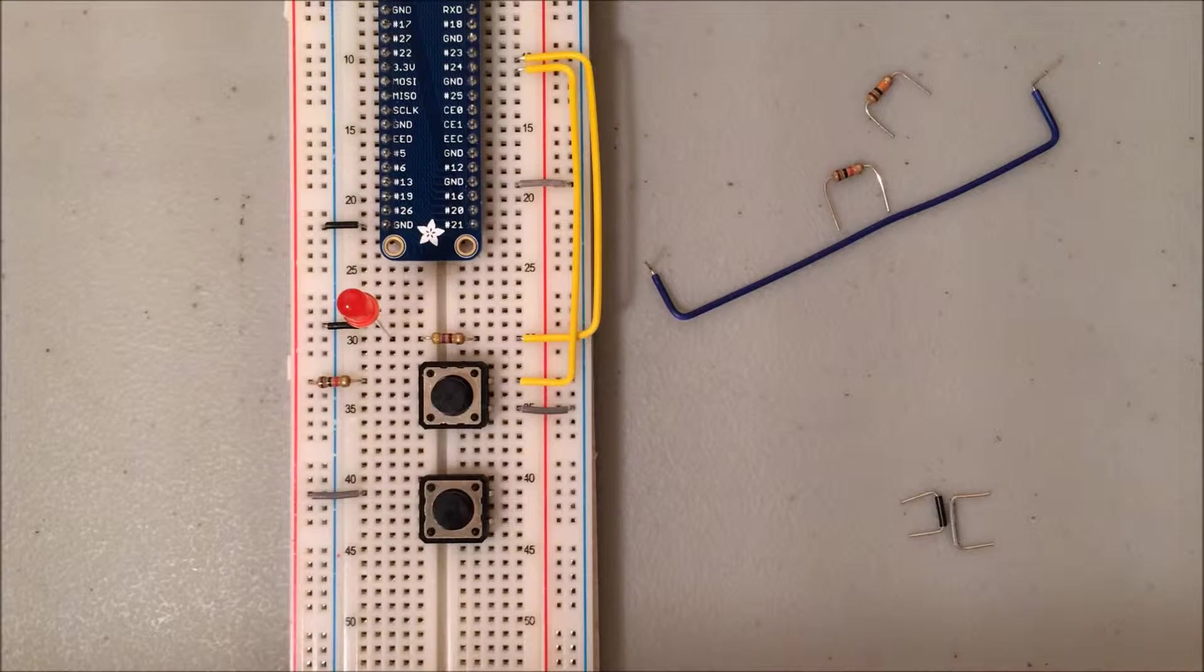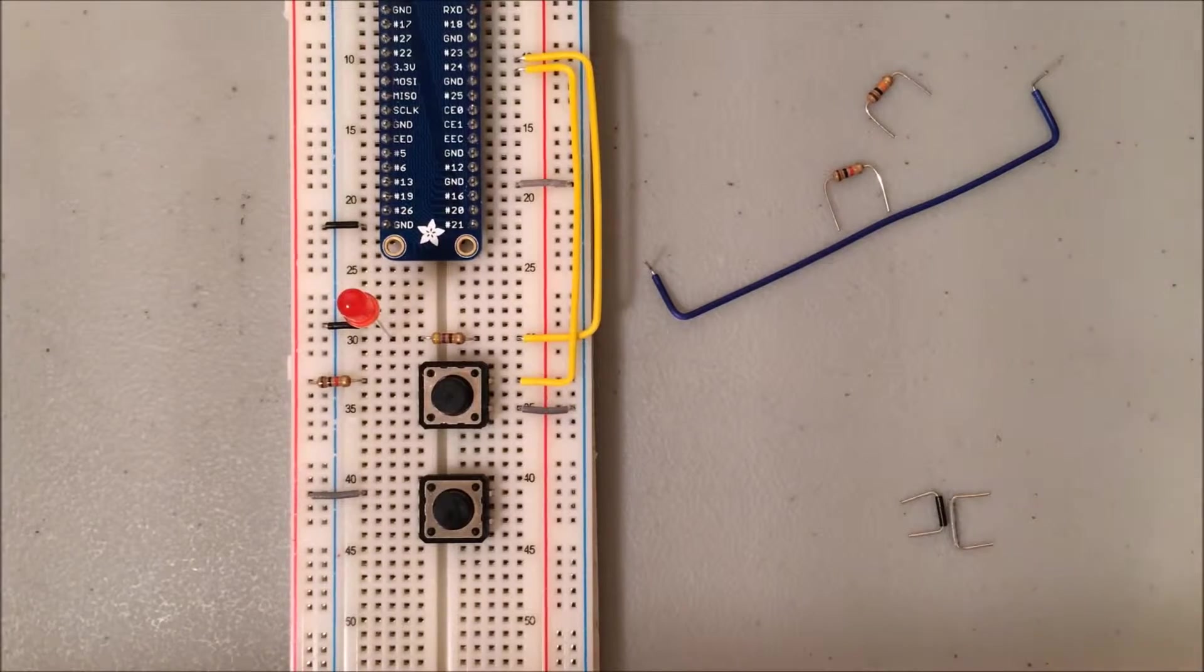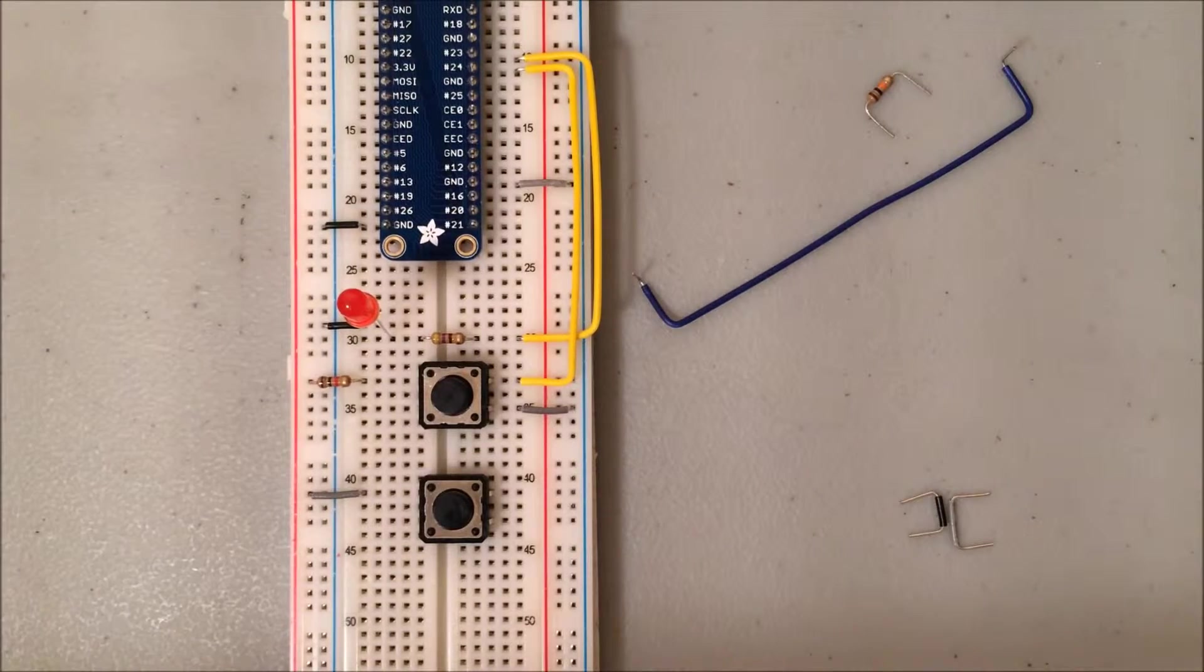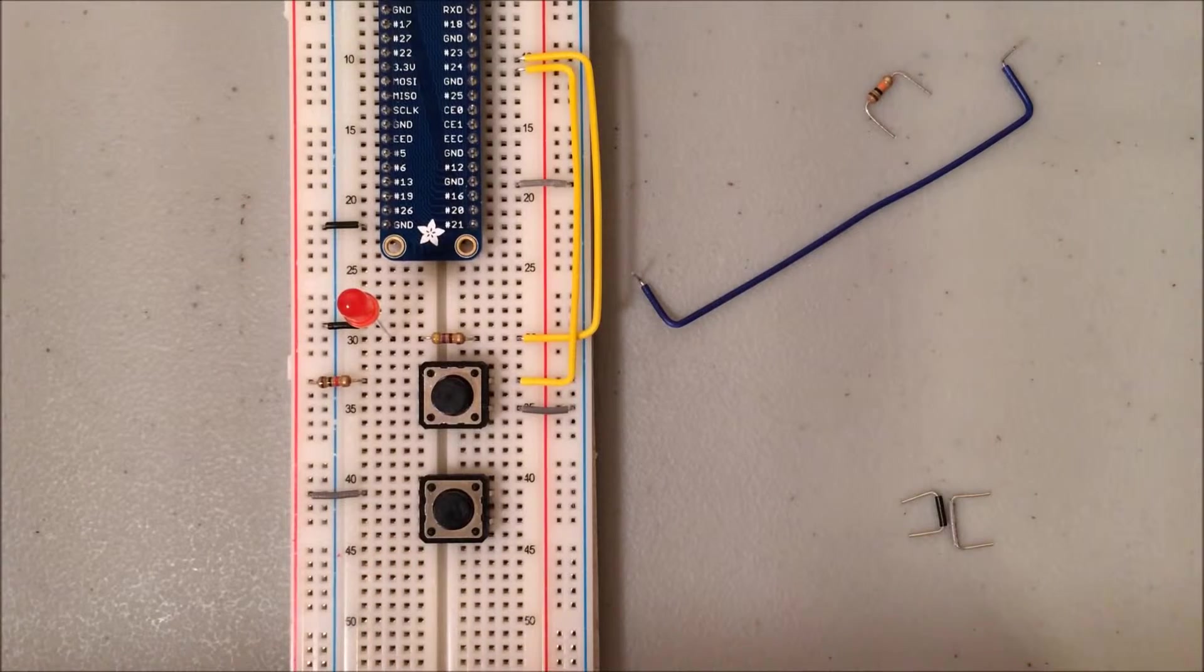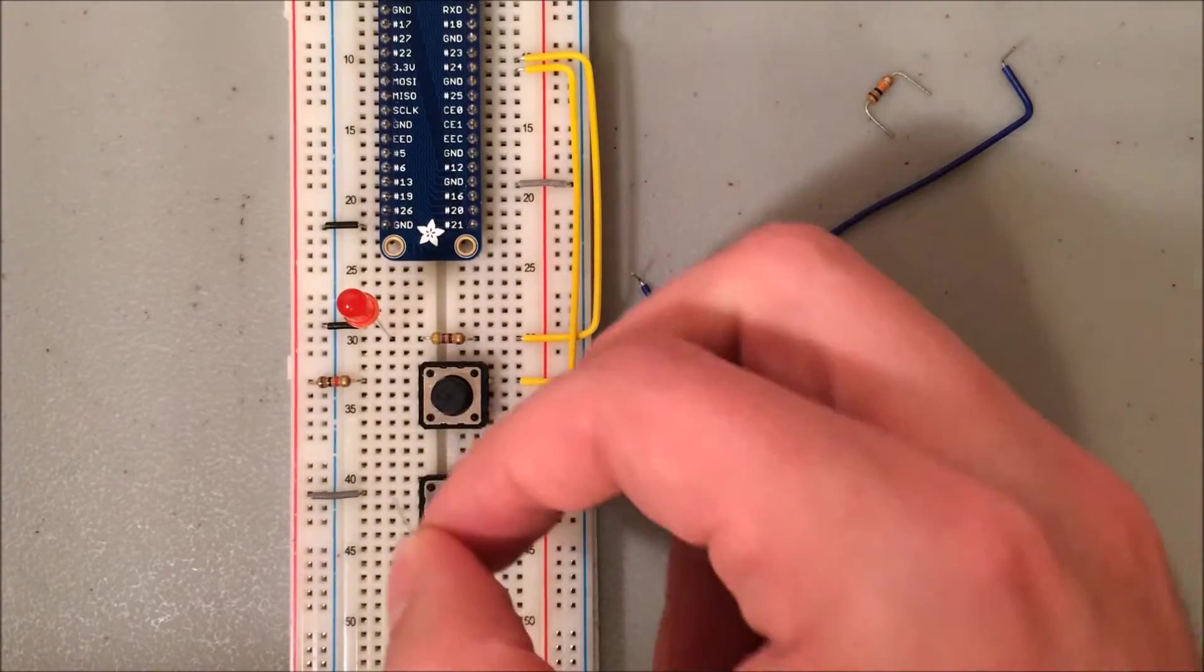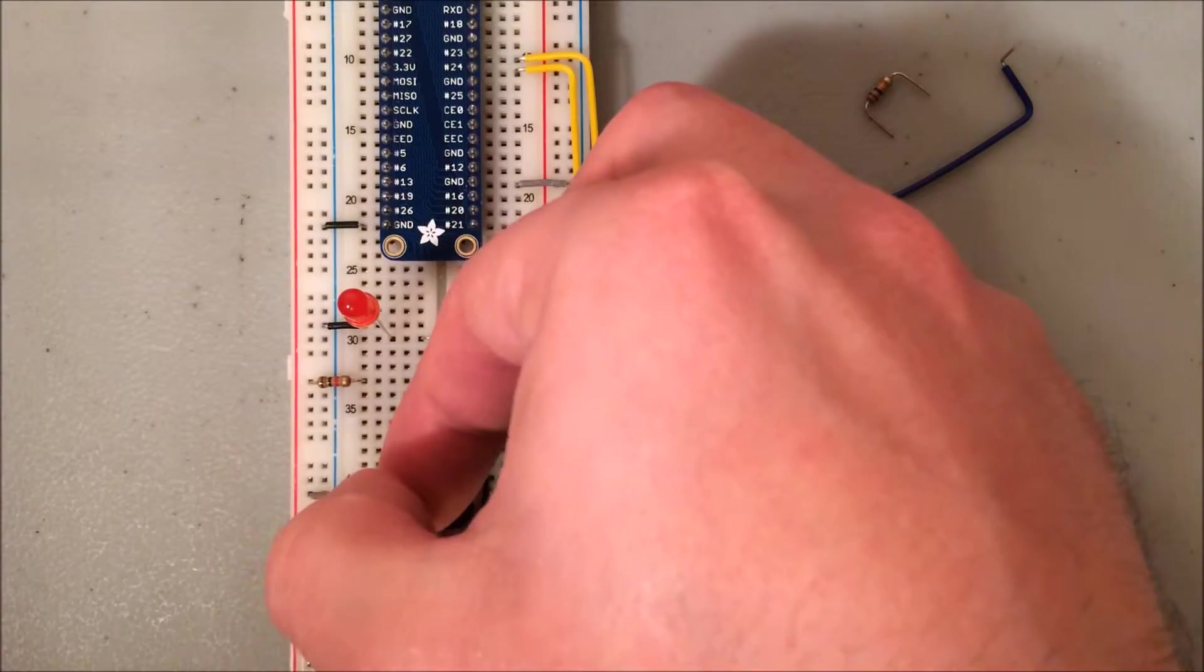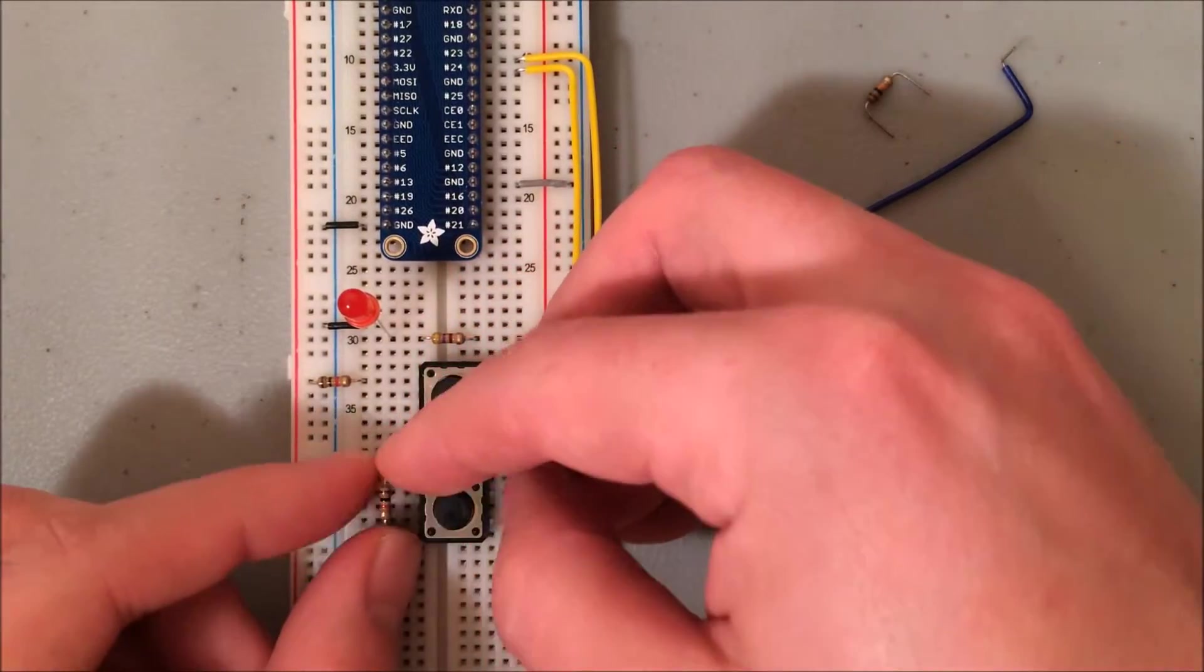This next step involves both a 1K and a 10K resistor. I'm actually going to go ahead and grab the 1K first. This 1K resistor is going to come off the lower leg of the button down here, which is in row 43, and it's actually going to span all the way up to row 39. So I'm going to bring it past the body of the button, so I'm going from 43 up to row 39.